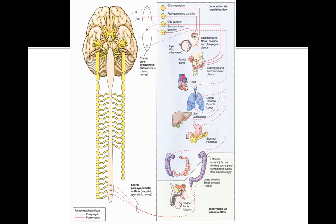In the reproductive system, the ovaries and the testes descend from a higher region in the posterior abdominal wall, and therefore their innervation is from the vagus nerve. Any question dealing with the ovaries and testes on the Comlex exam, you should immediately think of the vagus nerve. All other reproductive structures are innervated by the pelvic splanchnic nerve.